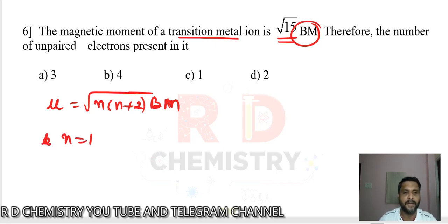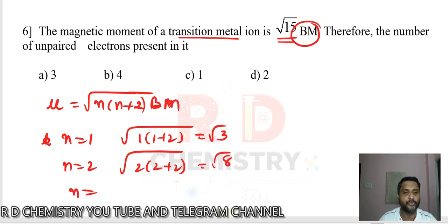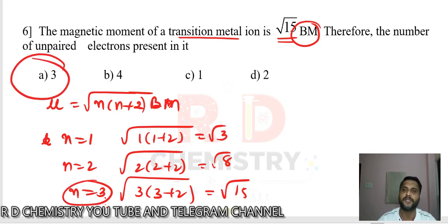If n = 1: μ = √(1×3) = √3 BM. If n = 2: μ = √(2×4) = √8 BM. If n = 3: μ = √(3×5) = √15 BM. Therefore n = 3, meaning there are 3 unpaired electrons. The answer is option A.